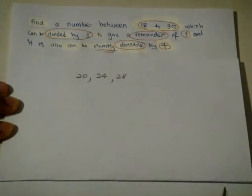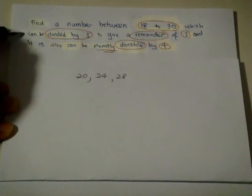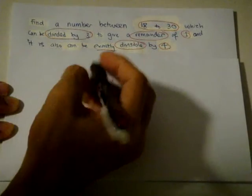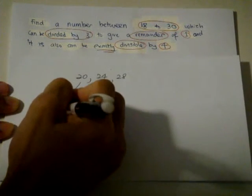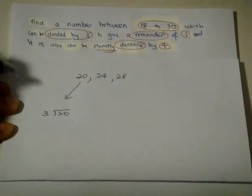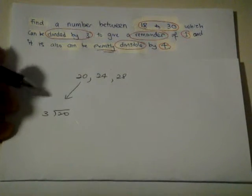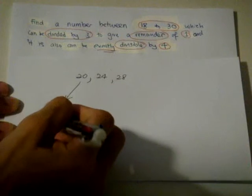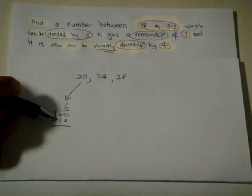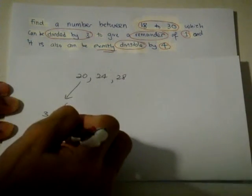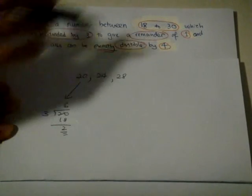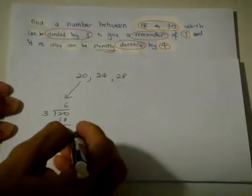Now divide by 3. 20 divided by 3: 6 times 3 is 18, remainder 2. This is remainder 2, but we need remainder 1, so this is wrong.